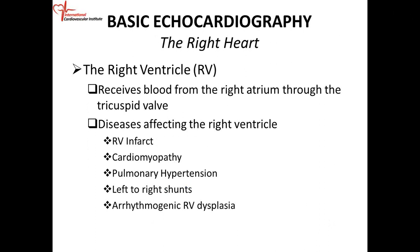Right ventricular infarct is very important clinically, and these patients are usually treated differently. You might have a cardiomyopathy that involves just the right ventricle, or the patient may have a generalized cardiomyopathy involving the right ventricle as well. Pulmonary hypertension affects how well the right ventricle performs because the RV has to pump blood into the pulmonary circuit. The RV will get thickened over time and can fail — pulmonary hypertension can cause the right ventricle to fail, which is a downward spiral for the patient.